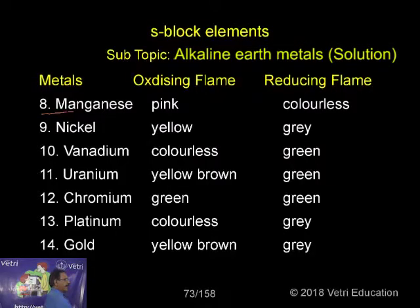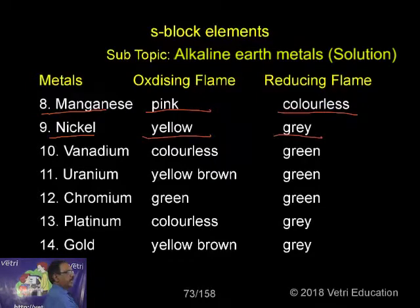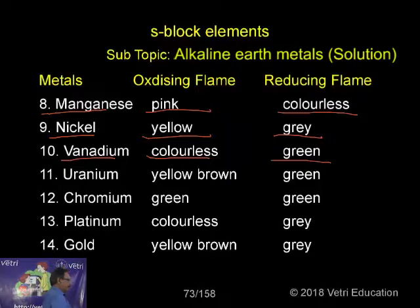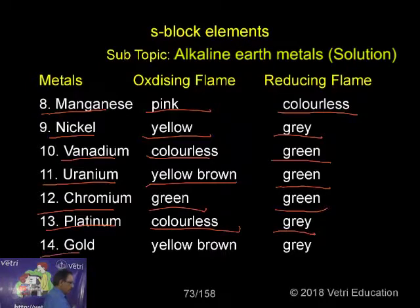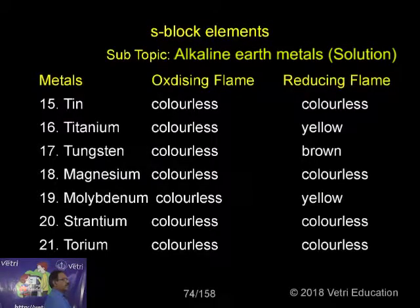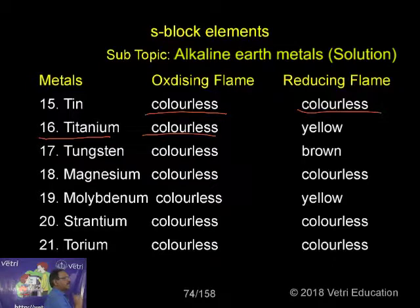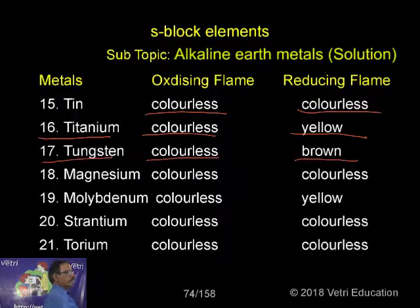The list continues: cobalt gives pink in oxidizing flame and gray in reducing flame. Gold gives yellow or brown in oxidizing flame and gray in reducing flame. Tin is colorless in oxidizing flame and colorless in reducing flame. Titanium is colorless in oxidizing flame and yellow in reducing flame. Tungsten is colorless in oxidizing flame and brown in reducing flame.